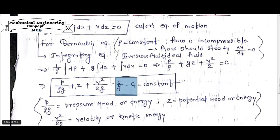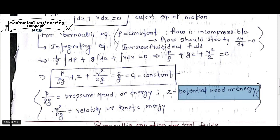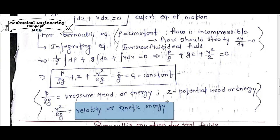Here P by rho g is pressure head or pressure energy, z is the potential head or potential energy, and v square by 2g is the velocity head or kinetic energy.